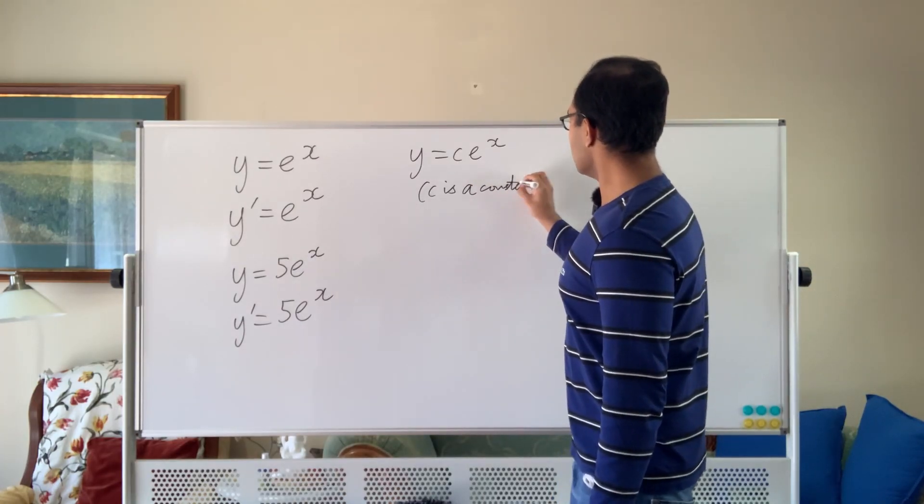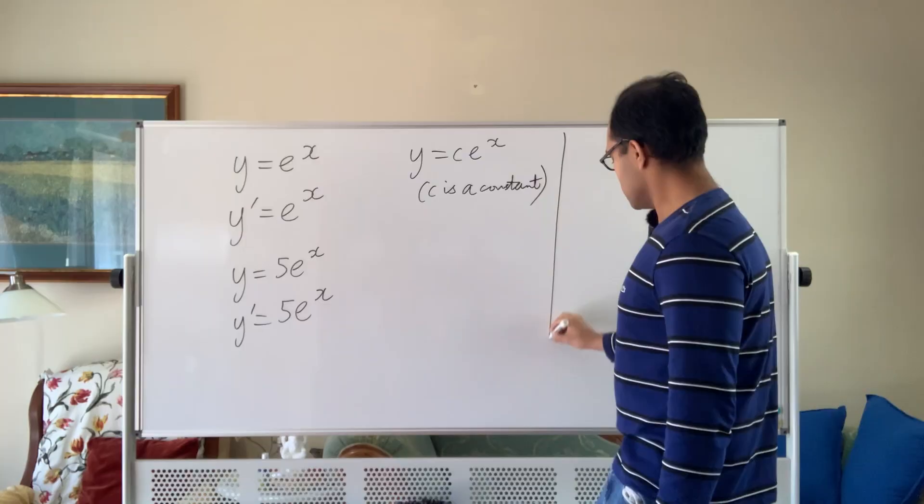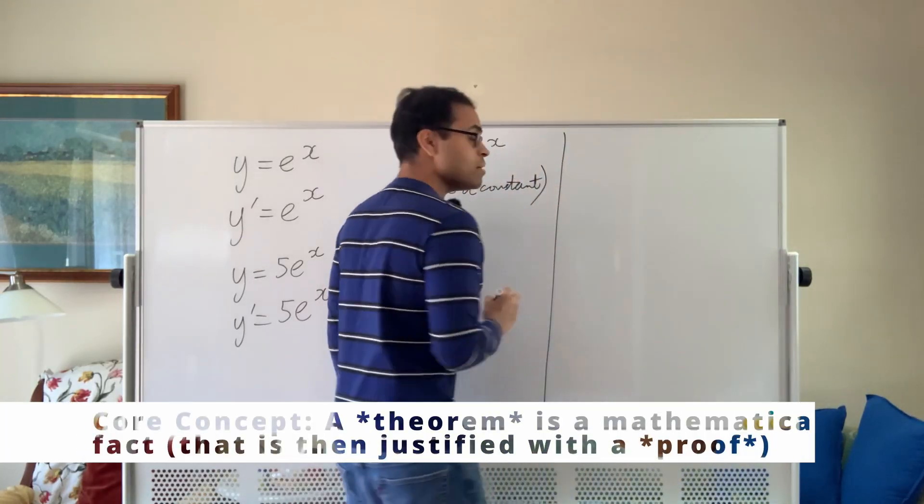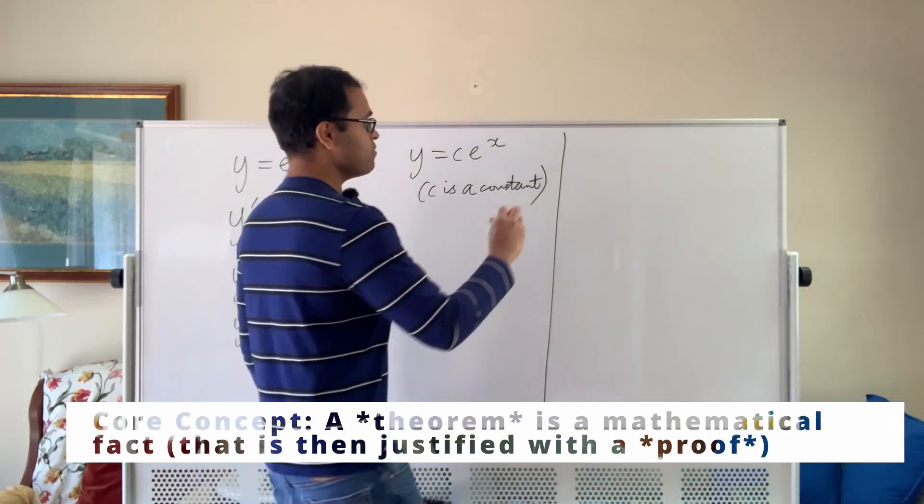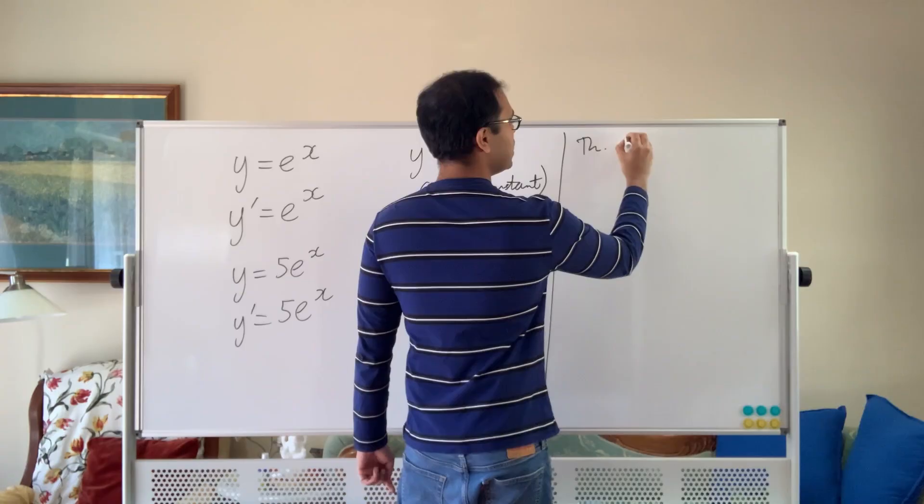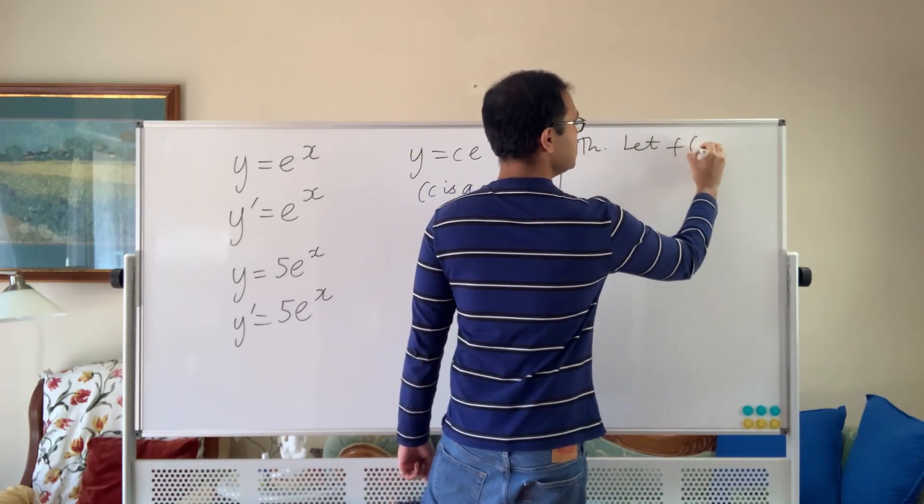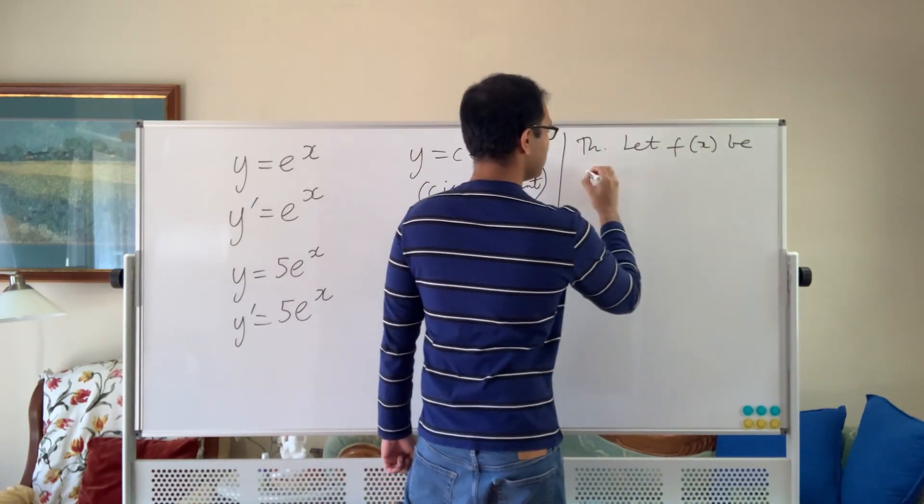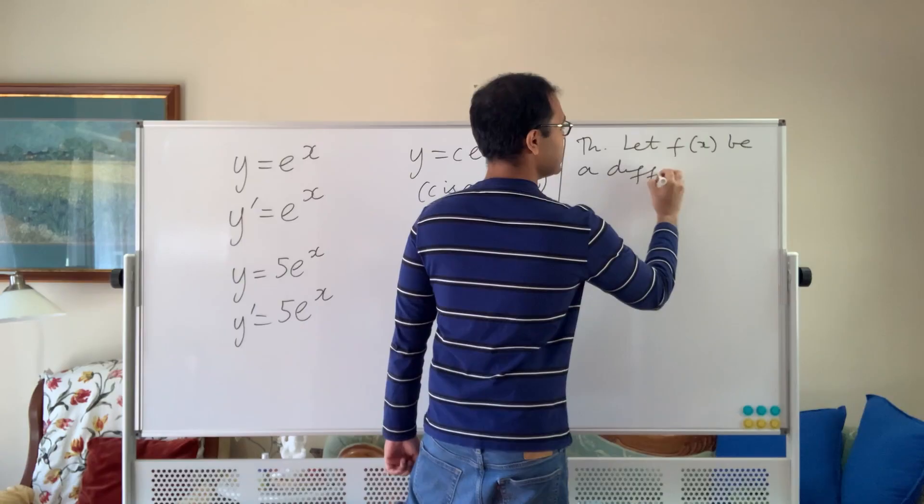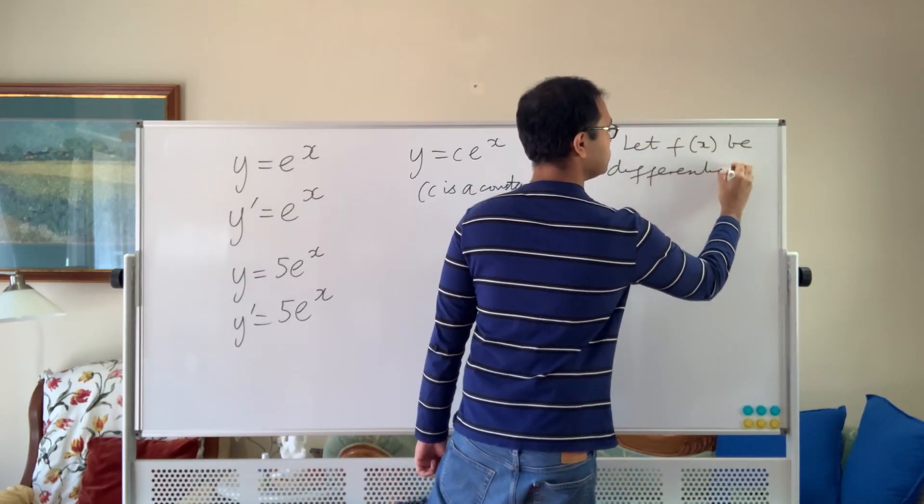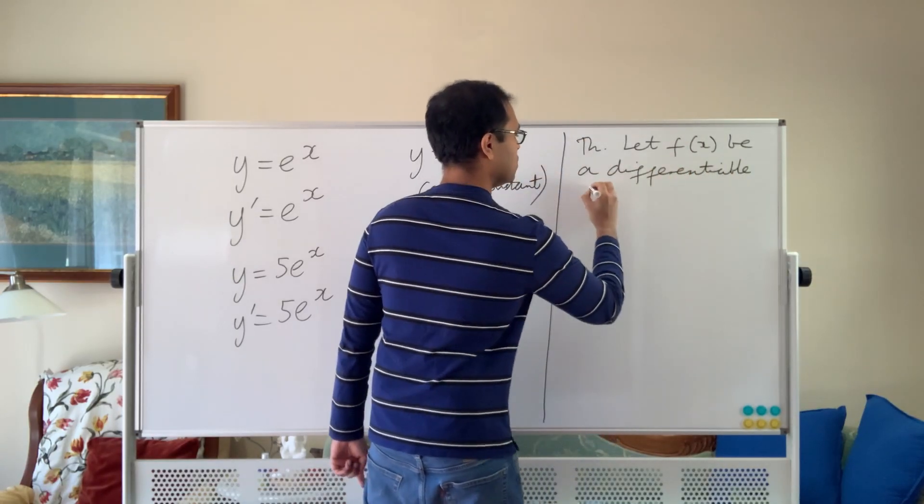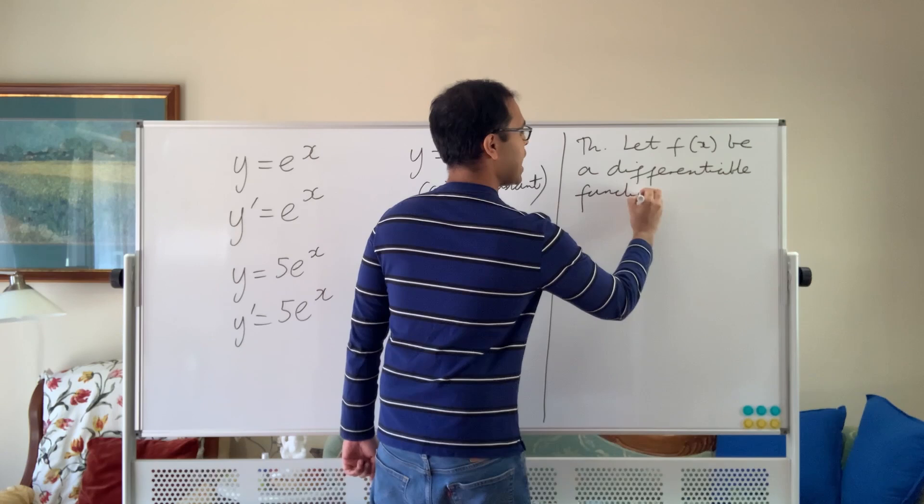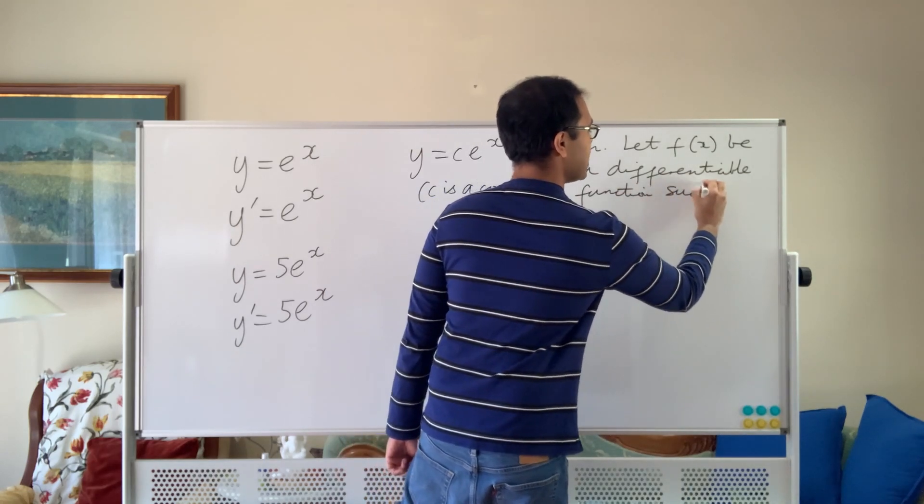So number one is, let us assume that there is a function. So this is going to be a theorem. The theorem is that, let f of x be a function. So here's the theorem, let f of x be a differentiable function such that